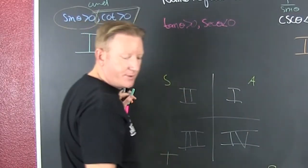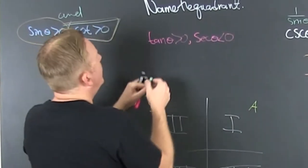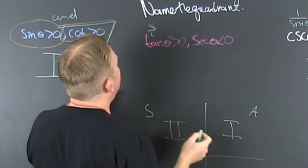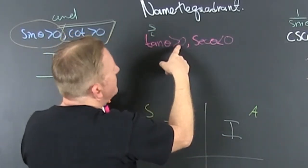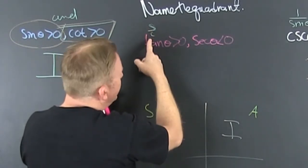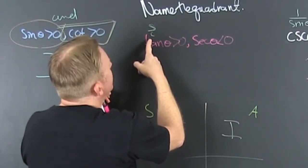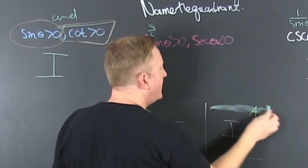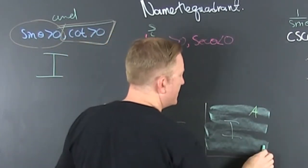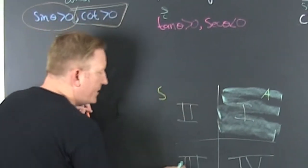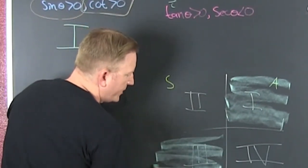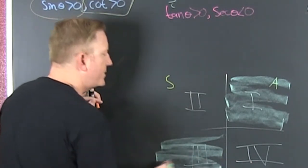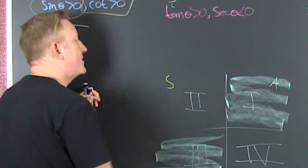Now we're looking to see where tangent is greater than zero. The tangent is sine over cosine. For the tangent to be greater than zero, they need to both have the same sign. So they need to both be positive, which happens in quadrant one because all students are positive in quadrant one, and it's also positive in quadrant three because sine is negative and cosine is negative, and negative over negative is positive.